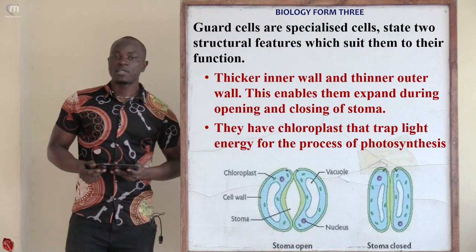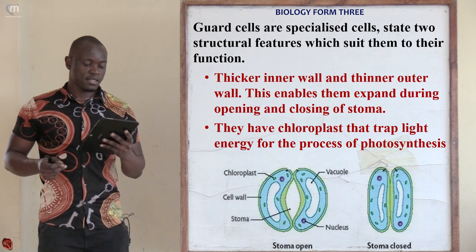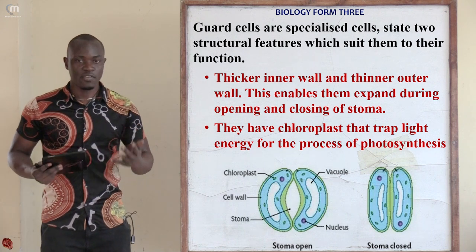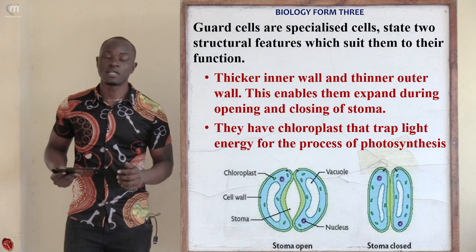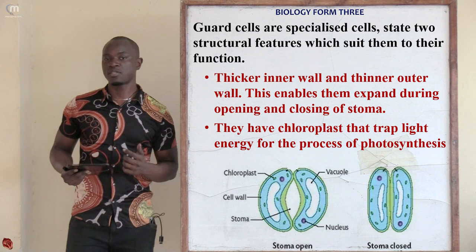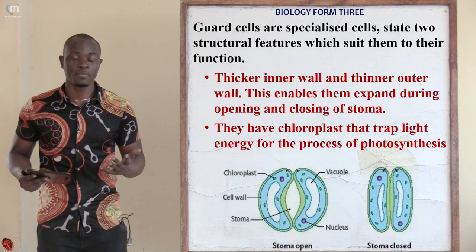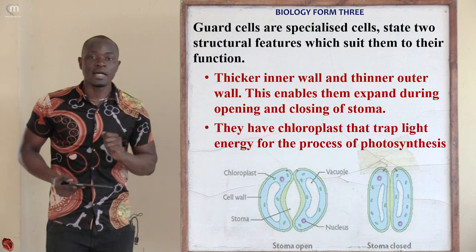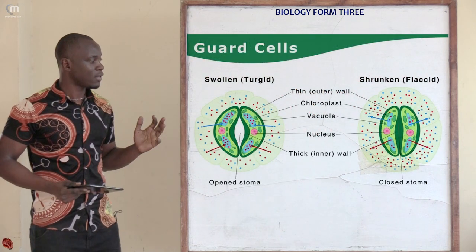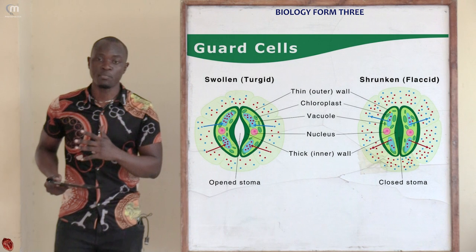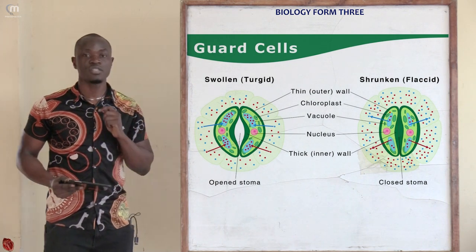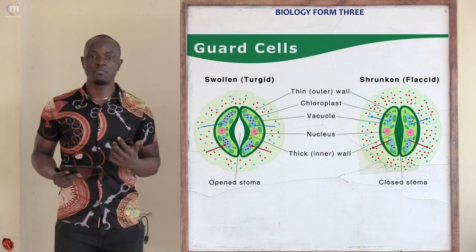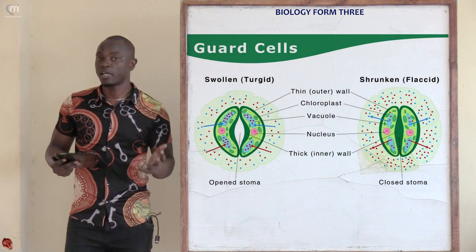Question number seven: guard cells are specialized cells. State two features which suit them for their function. Guard cells are specialized, and looking at this diagram, when the guard cell is turgid the stoma opens; when it is flaccid the stoma closes. So what two features make guard cells function as guard cells?